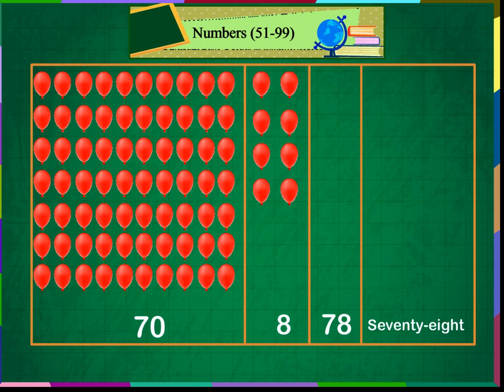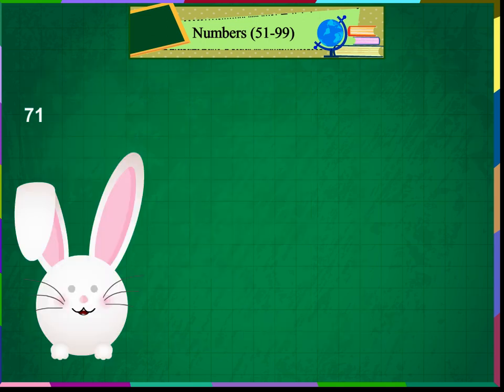70 and 8 makes 78. 70 and 9 makes 79. 70 and 10 makes 80. 71, 72,